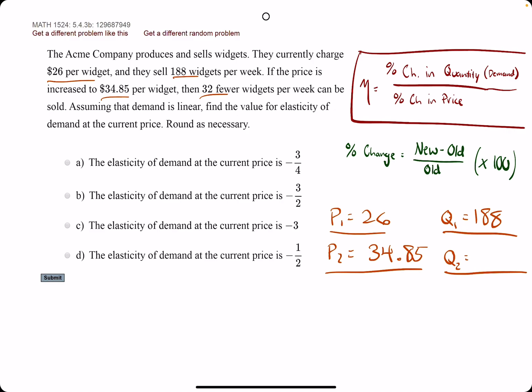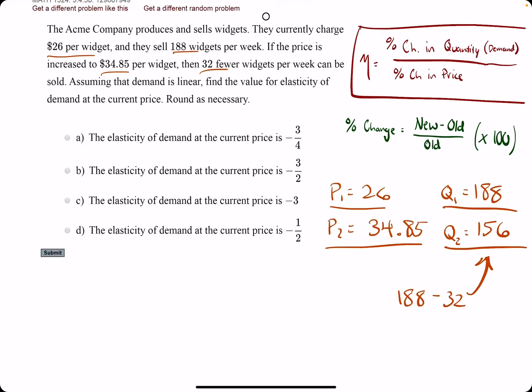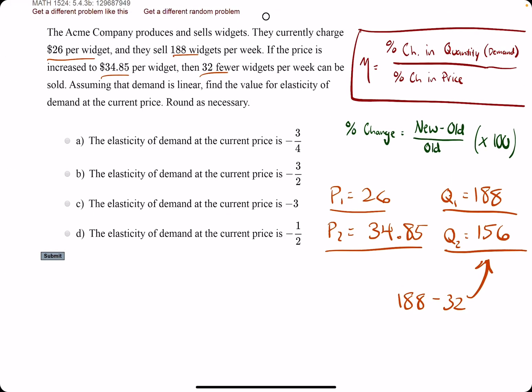Then they say 32 fewer widgets are sold once the price increases. So 188 minus 32 is what will go there. So let's do a little mental math. That's 156. 156 is our new quantity. So we have everything we need to find percent change in both of these.